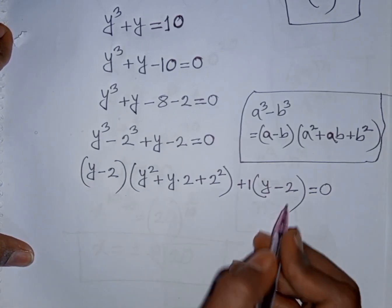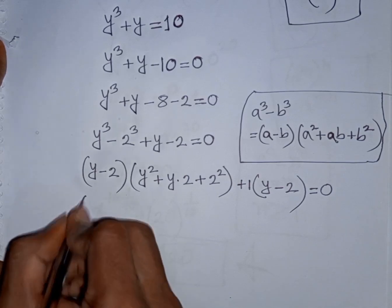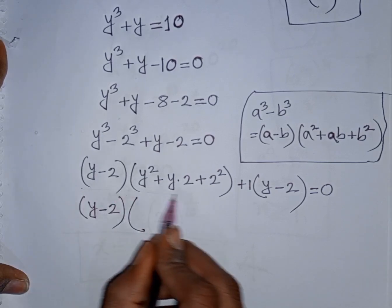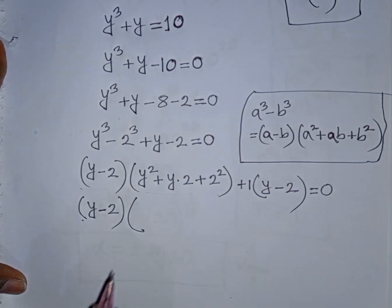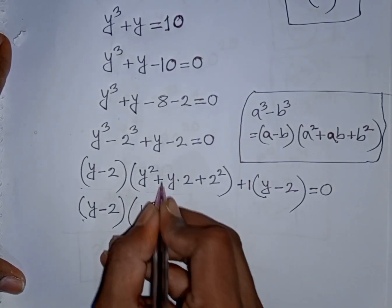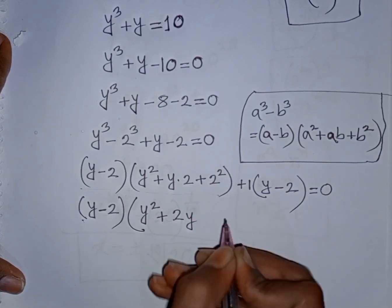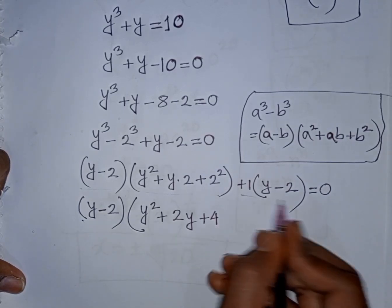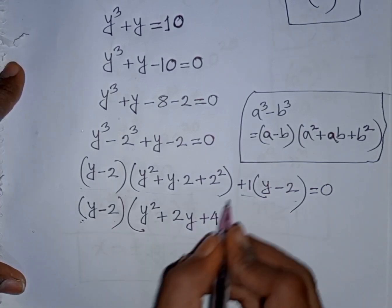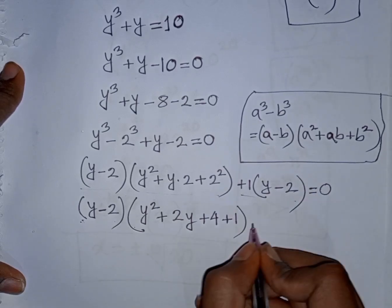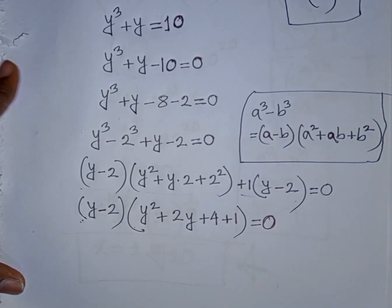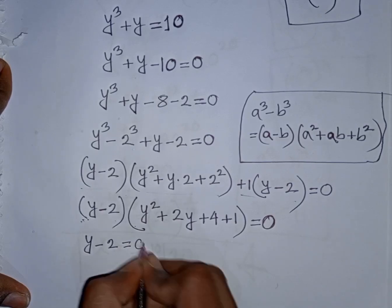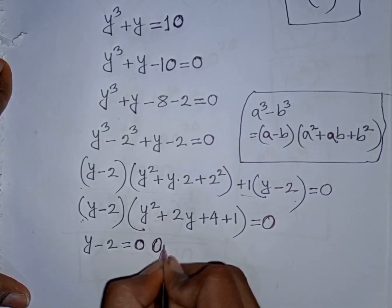Now we see y minus 2 appears in both terms, so y minus 2 is a common factor. Taking y minus 2 out of the bracket, the expression simplifies to y minus 2 times y squared plus 2y plus 4 plus 1, which is y squared plus 2y plus 5, equals 0.